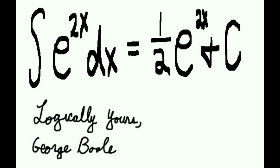The integral of e to the 2x dx equals 1/2 e to the 2x plus c. You may want to review this a few times till you've mastered the material therein. Logically yours, George Bull.